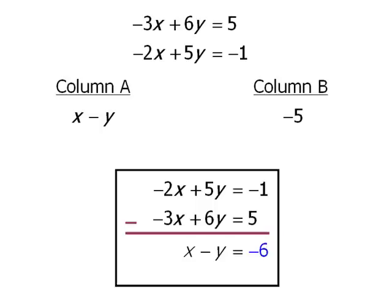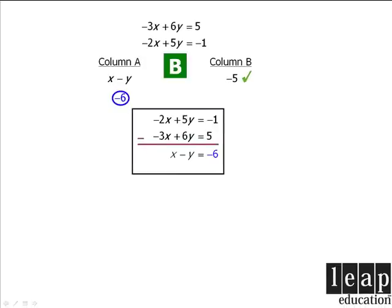So given our two equations, we can now conclude that x minus y equals negative 6. So in column A, then we can now replace x minus y with negative 6. From here we are comparing negative 6 with negative 5. Since negative 5 is greater than negative 6, the answer here is B.